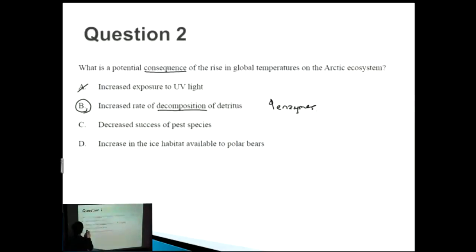Decreased success of pest species—no, you usually have an increased success of pest species. And D: an increase in the ice habitat available to polar bears—well, that's just silly because if you had an increase in temperature, more ice would melt, so ice habitat would decrease. That's incorrect. So the correct answer is B.